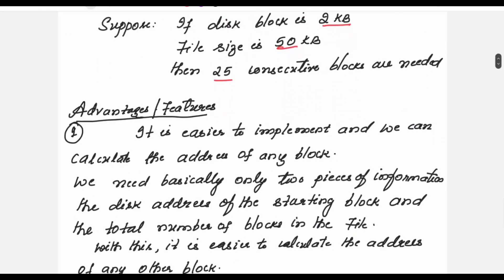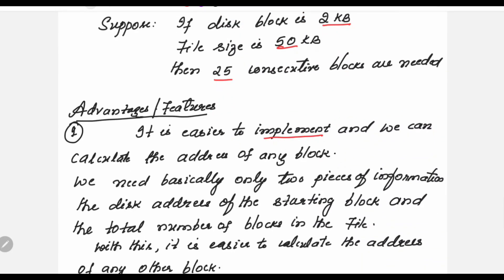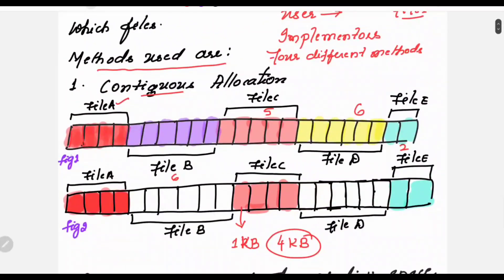What are its advantages? It is easier to implement, and we can calculate the address of any block. To calculate the address of any block, we need only two pieces of information: the address of the starting block and how many blocks that file occupies. If you know these two things, it is easy to calculate the address of any other block.